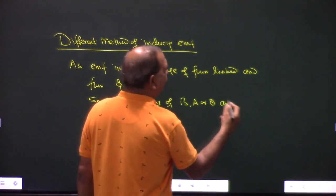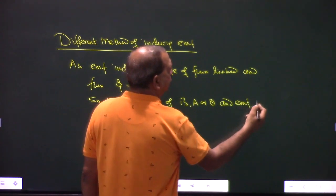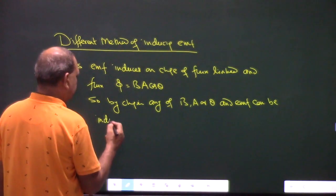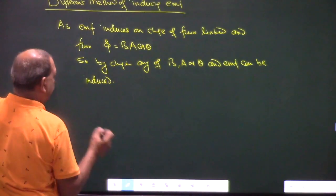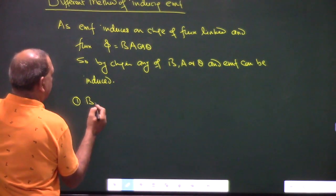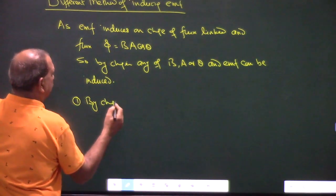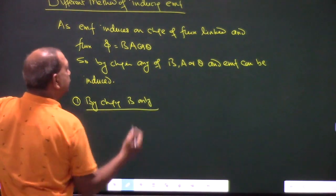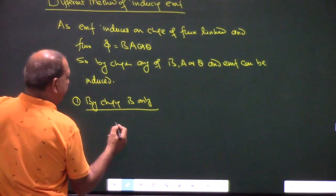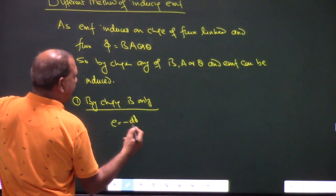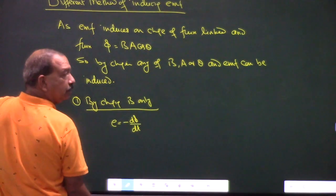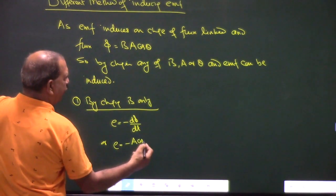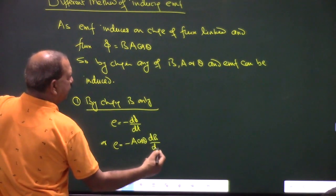EMF can be induced first by changing B only. So, E equals minus d(phi)/dt, which is E equals minus A·cos(theta)·dB/dt.